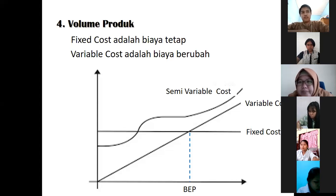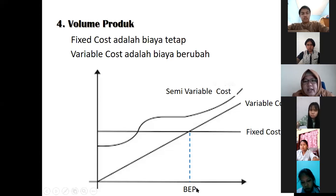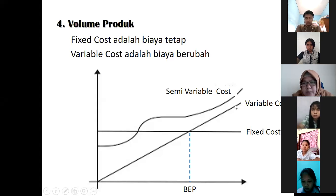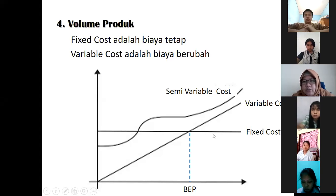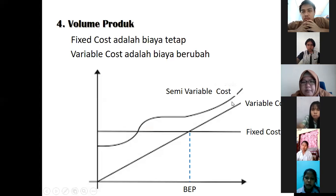Bedakan biaya variable sama biaya tetap. Ini nanti harus bisa kalian bedakan ya, soalnya nanti biar nggak bingung. Di grafik ini ada biaya variable, kalau jumlahnya semakin meningkat, biaya variable pun semakin meningkat. Biaya tetap itu garisnya lurus. Berapapun jumlah produksinya, biaya tetapnya tetap garisnya lurus aja, nggak akan naik, nggak turun. Di bawah ini harusnya ada jumlah kualitasnya. Jadi di sini juga ada semi-variable cost: ini kadang-kadang tetap, kadang-kadang berubah.